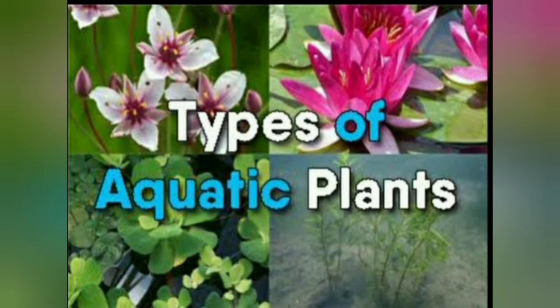Plants in water: plants that grow in water are known as aquatic plants. Aquatic plants can be classified into three categories: first, floating plants; second, underwater plants; third, fixed plants.